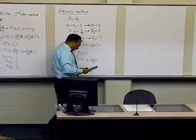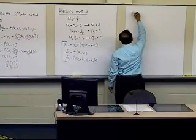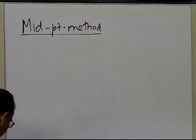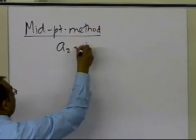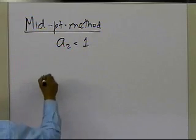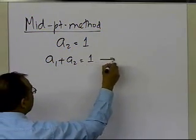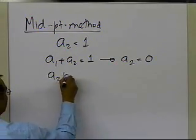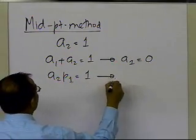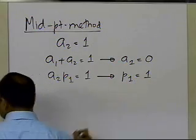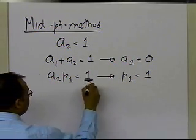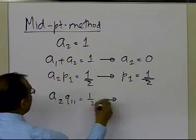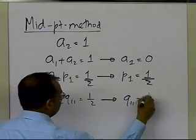The second method is the Midpoint Method, where a2 is chosen as 1. With a2 equal to 1, the equation a1 plus a2 equals 1 gives a1 equal to 0. Then a2 times p1 equals one-half gives p1 equal to one-half. And a2 times q11 equals one-half gives q11 equal to one-half as well.